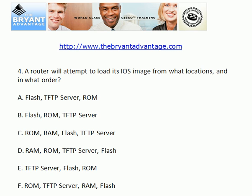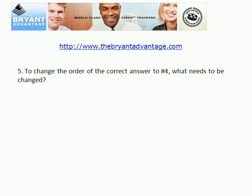Let's take a look at question four. A router is going to attempt to load its IOS image from where, and in what order, again by default. One of these six choices is the correct order. Definitely something you want to know for the real world as well as the exams. Now question five: to change the order of the correct answer to question four, what needs to be changed?